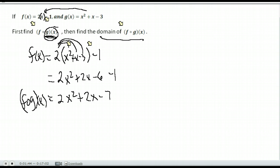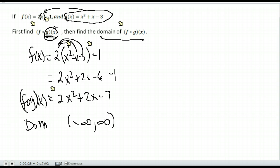Now let's do the second part of the problem: find the domain. We need to consider our final result, 2x squared plus 2x minus 7. We can put any x value into this function — no fractions and no square roots — so the domain is all real numbers. We also have to consider what we plugged in: the domain of g of x, which is also all real numbers. So our domain is all real numbers, or negative infinity to infinity.